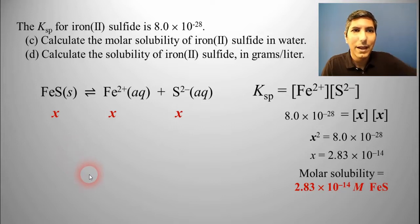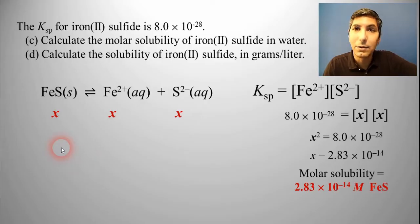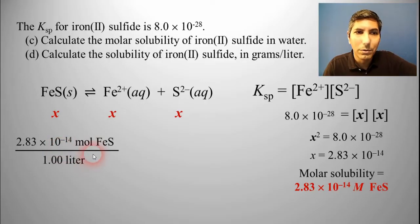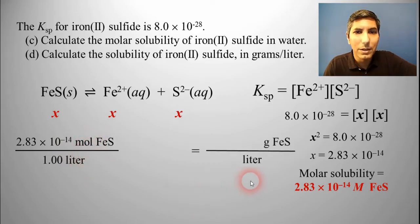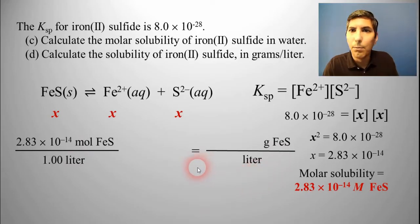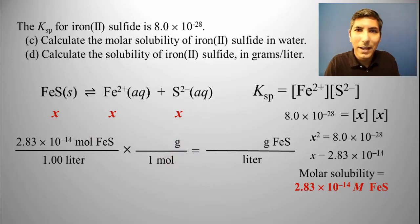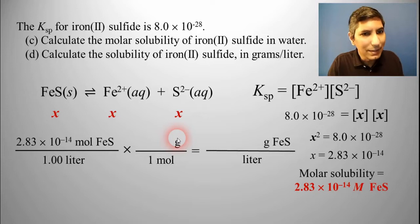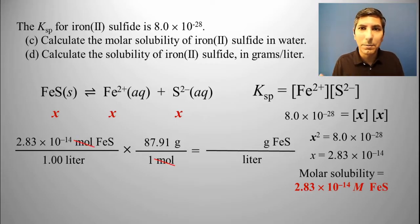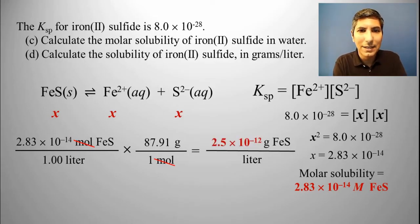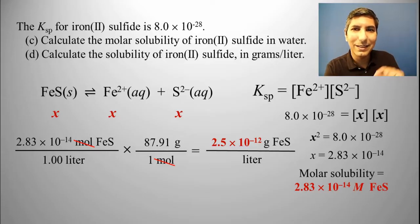For part D, we need to calculate the solubility in grams per liter. All we have to do is take the molar solubility and convert it to grams per liter — just a moles-to-grams conversion. One mole on the bottom, grams on top. The molar mass of FeS is about 87.91 grams per mole. Canceling moles and multiplying across, we find the solubility is about 2.5 × 10⁻¹² grams per liter. That is an exceedingly small amount, so this is a very insoluble compound.